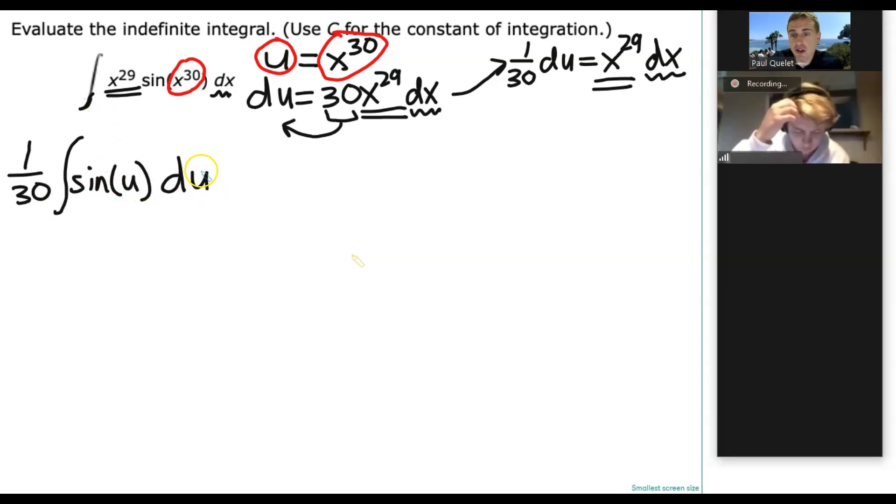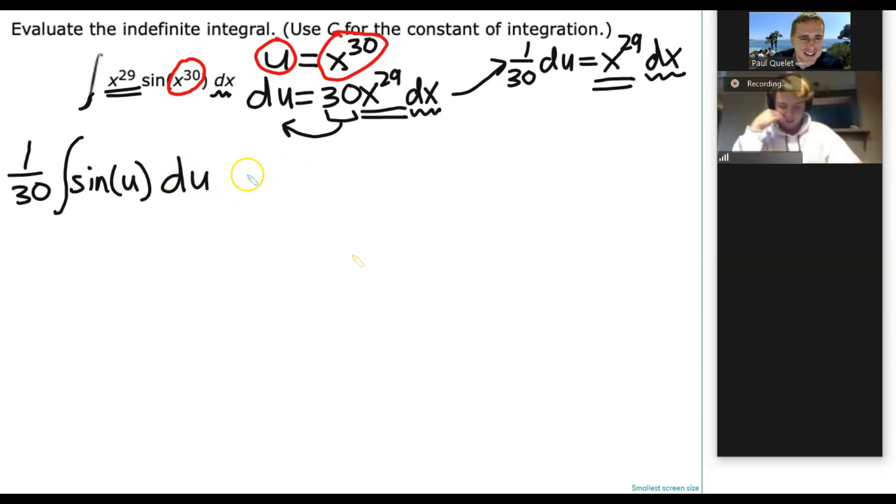Or if I remember what thing's derivative gives me sine, then, you know, I just go backwards, right? Yeah. So, can you tell me what is the anti-derivative of sine u going to be? So, I think it's going to be negative cosine u. Yeah, because I think the derivative of sine is cosine. The derivative of cosine is negative sine. So, if you go backwards from a positive sine, you'd get a negative cosine. Is that correct? Yeah. So, we're going to get minus 1 over 30, cosine of u plus c.